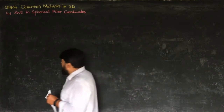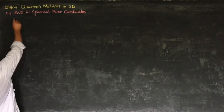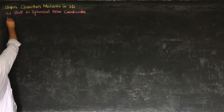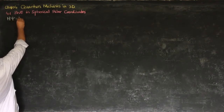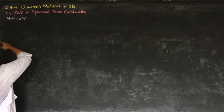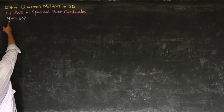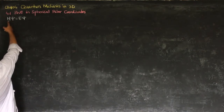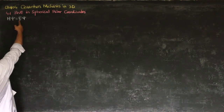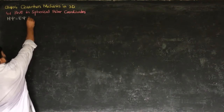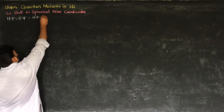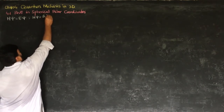Let me start with the time-independent Schrödinger wave equation, which is H-psi equals E-psi, where H is the Hamiltonian — a combination of kinetic energy and potential energy — and E is the energy. H is the operator, psi is the eigenfunction, and E is the eigenvalue.